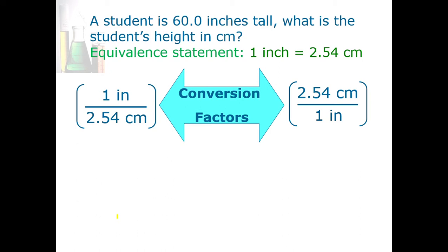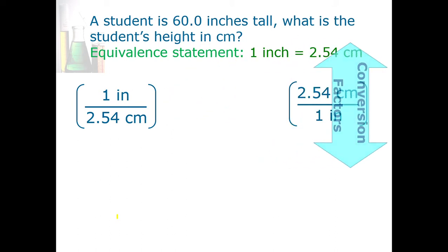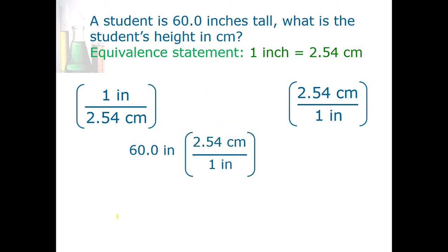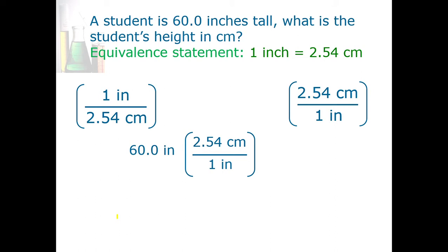The way dimensional analysis works is I'm going to build a roadmap from what they give me — which is 60.0 inches — to what they want, which is centimeters. I want my conversion factor to be one where the old units (inches) are in the bottom and the new units (centimeters) are on top. So it should be 2.54 centimeters over one inch, because the inches are going to cancel out. Now I can let my calculator do the rest and find out this is 152 centimeters.